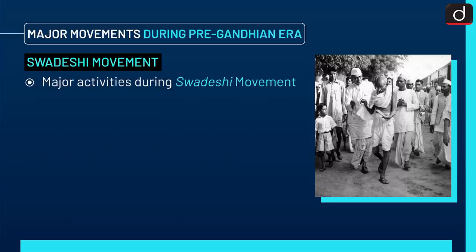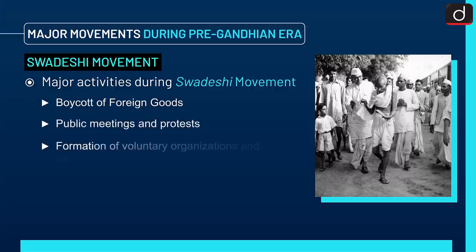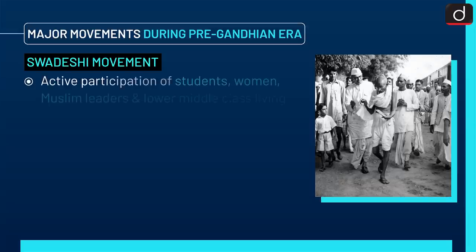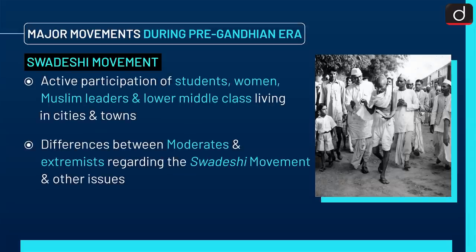Major activities during the Swadeshi Movement were boycott of foreign goods, public meetings and protests, formation of voluntary organizations and committees, national education programs, and promotion of indigenous industries. There was active participation of students, women, Muslim leaders, and the lower middle class living in cities and towns.